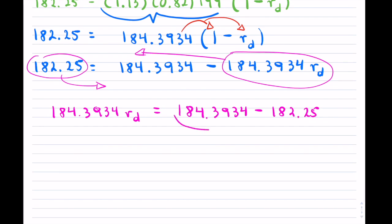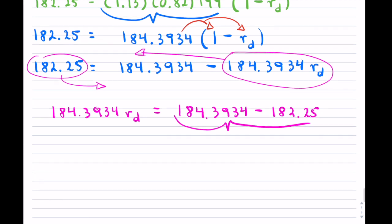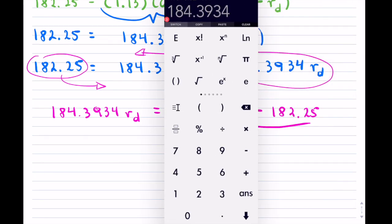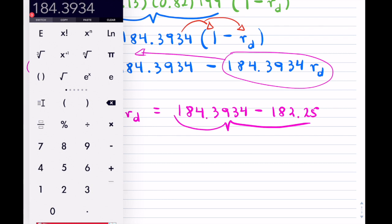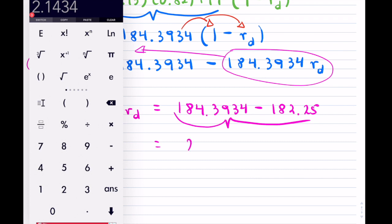So that will lead to 184.3934 times the rate equals to 184.3934 minus 182.25. So let me do the subtraction here.